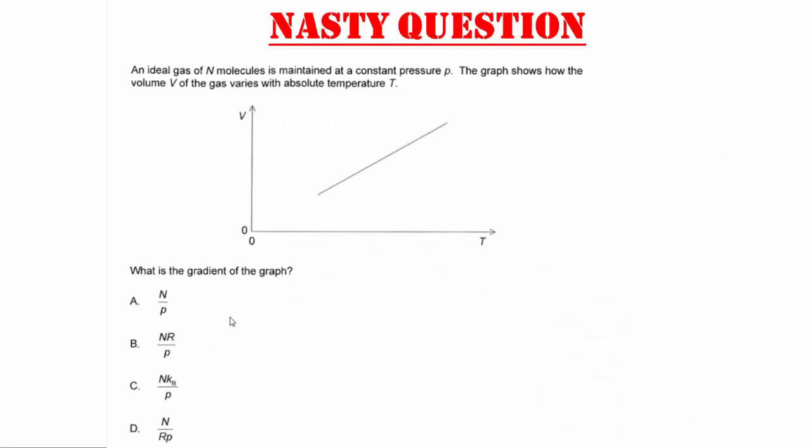Now we have a nasty, nasty question. This was actually in the exam for the November 2016 exam, and it was horrid. But we'll look at this one. An ideal gas of N molecules is maintained at a constant pressure P. The graph shows how the volume V of a gas varies with absolute temperature T. What is the gradient of the graph? What is basically the change of V divided by the change of T? Now, which one do you think it would be?